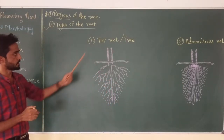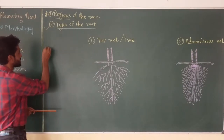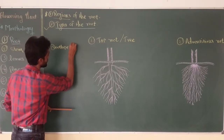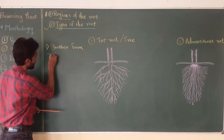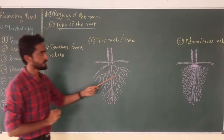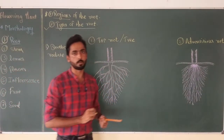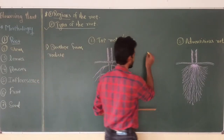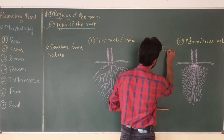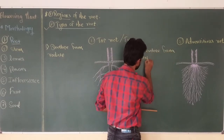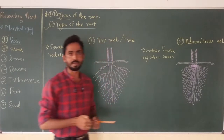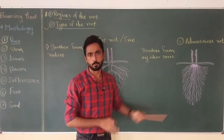The first characteristic feature of the tap root system is that this type of root is developed from the radicle at the time of seed germination. Adventitious roots, on the other hand, are developed from any other part except the radicle — they generally develop from parts of the plant like stem or leaves, but they do not develop from the radicle.